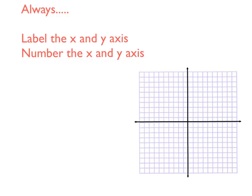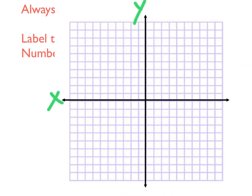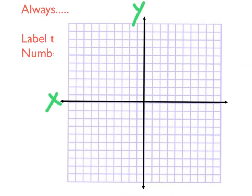When we are graphing things, the first thing you want to do is always label the x and the y-axis. Remember: x is sideways, y is up and down. Next, you always want to number the axes. So going right: one, two, three, four, five; right in the middle is zero; going left: negative one, negative two, negative three.